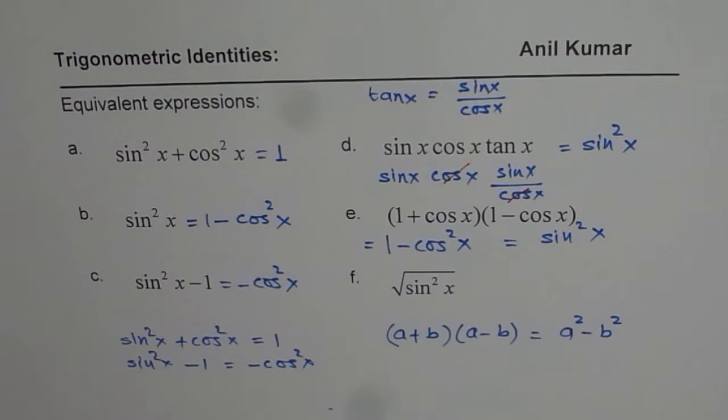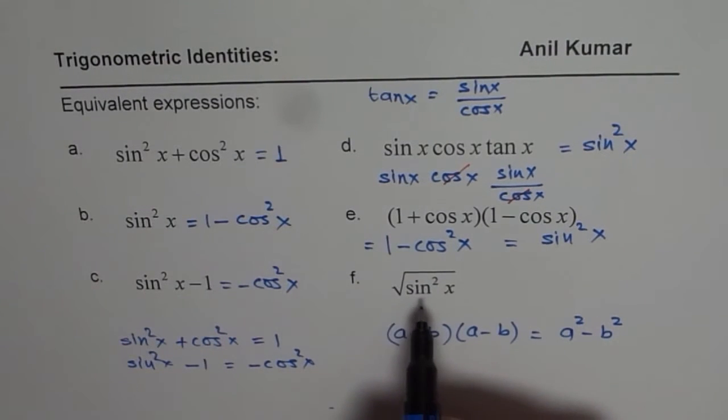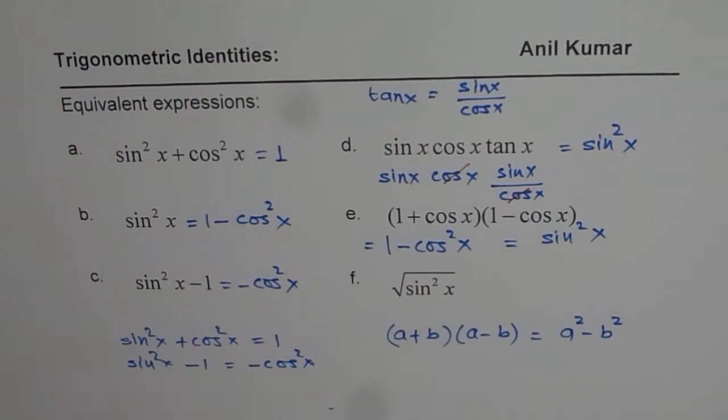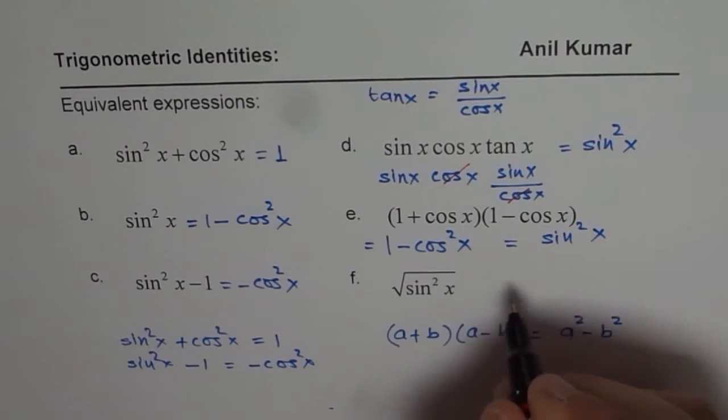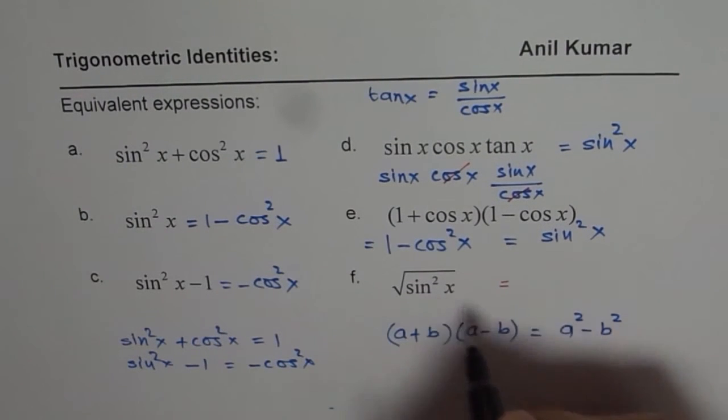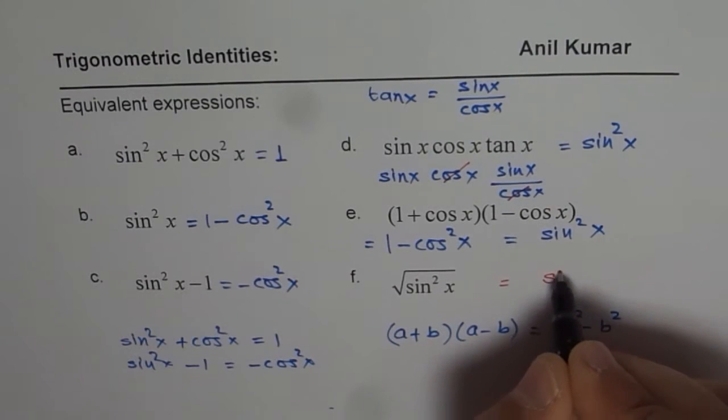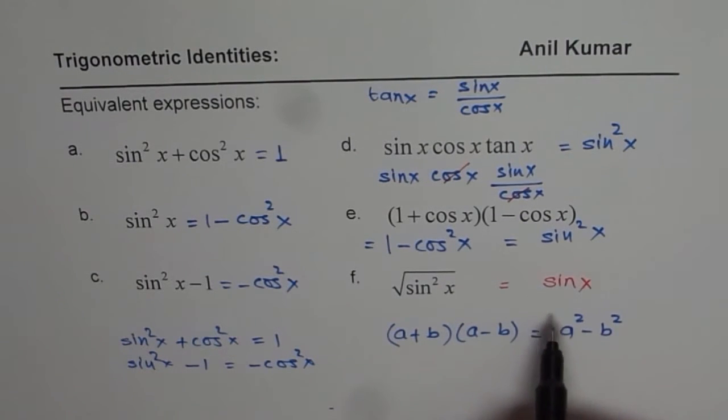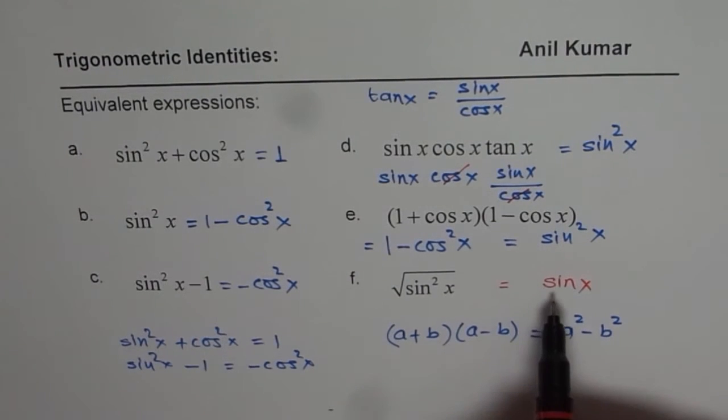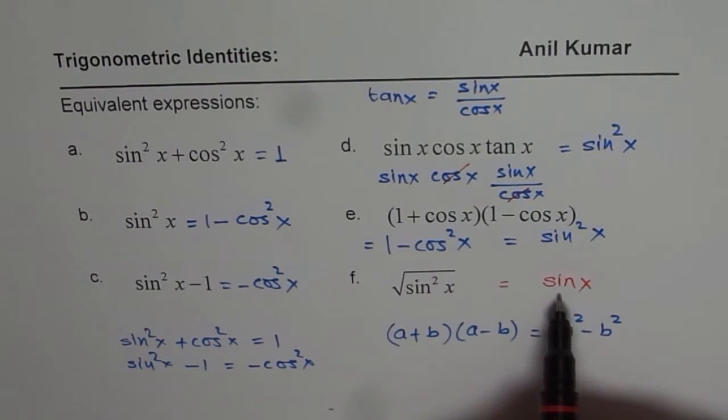And the last one here for you is square root of sine square x. Some of my students in the test paper, they will write this as sine x. Will this be right or wrong? That is another question for you to answer. It is absolutely wrong because sine x could be positive or negative. But square root will always give you positive part.